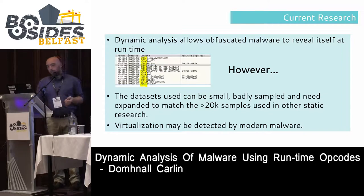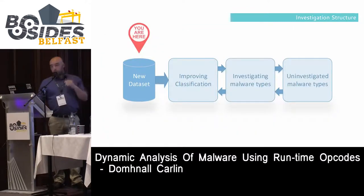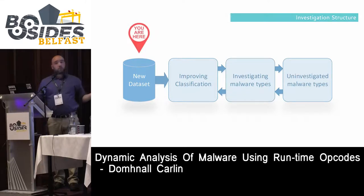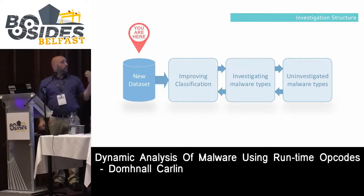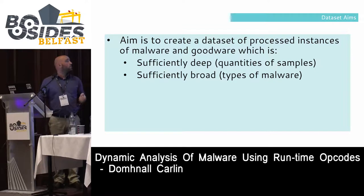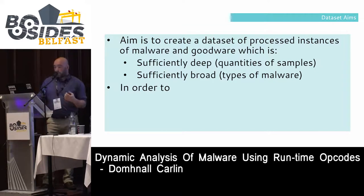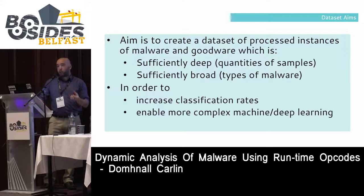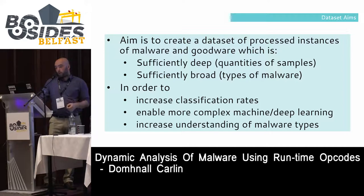Virtualization for dynamic analysis tends to be detectable by modern malware. In terms of my investigation structure, I've critiqued datasets used by dynamic analysis investigations for being too small and too badly sampled. We want to improve classification — discrimination between benign and malicious software — and then investigate malware types including uninvestigated ones. The aim is to create a dataset sufficiently deep in sample quantity, sufficiently broad in malware types, to enable complex machine and deep learning.